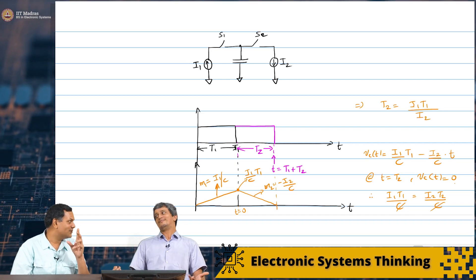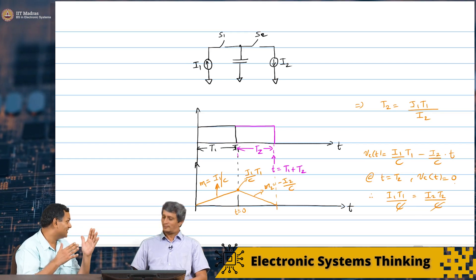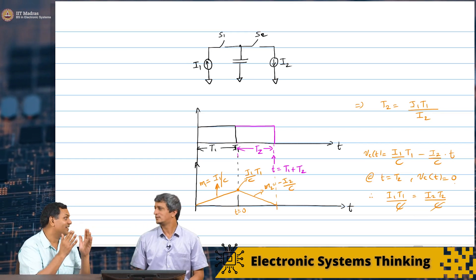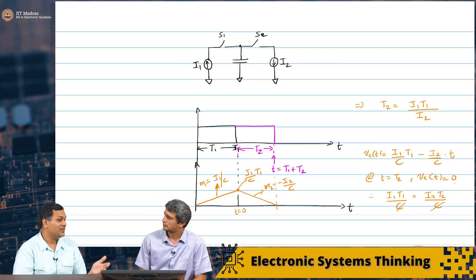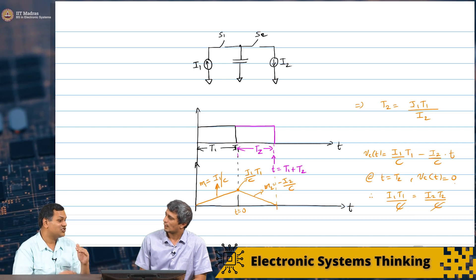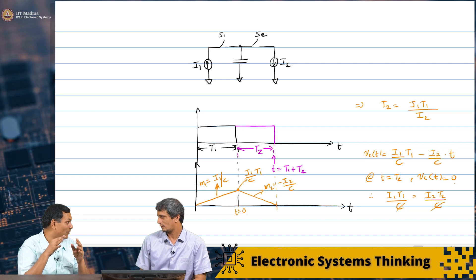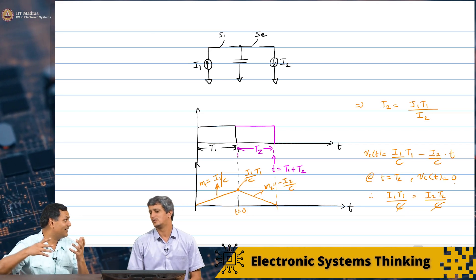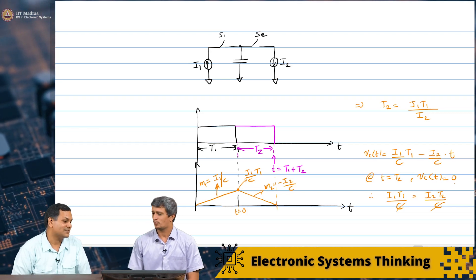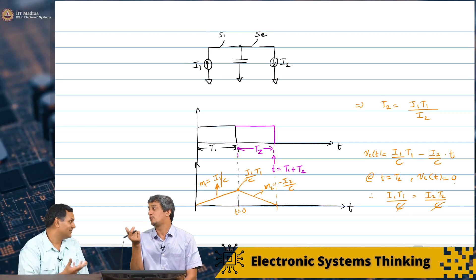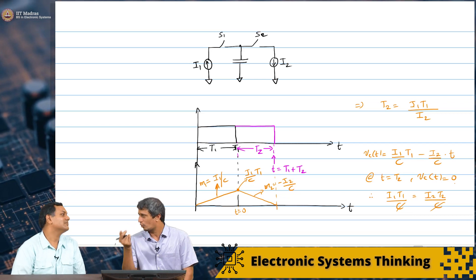It implies T2 should be I1 T1 by I2. I see why also. Because if one of the currents is much larger than the other, you should be charging. Let us say I1 is very large. Since it is charging for a time T1, I2 is smaller, it will take a longer time to discharge. It will need to discharge the same amount of voltage. The charge makes sense. So, the product of current into time should be a constant. Larger the current, lesser the time, smaller the current, more the time.